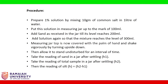Cover the top of the measuring jar with the palm of your hand and shake vigorously by turning it upside down, then allow it to stand undisturbed for an interval of time. Take the reading of sand in the jar after settling — that is h1. Take the reading of total sample in the jar after settling — that is h2. The reading of silt h is equal to h2 minus h1.